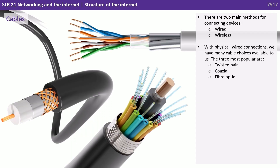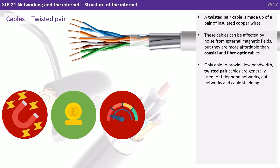There are two main methods of connecting devices: wired and wireless. With physical wired connections we have many cable options to choose from. The three most popular are twisted pair, coaxial and fibre optic. A twisted pair cable is made up of a pair of insulated copper wires. These cables can be affected by noise from external magnetic fields, but they're more affordable than coaxial and fibre optics. They're only able to provide low bandwidth and are generally used for telephone networks, data networks and cable shielding.